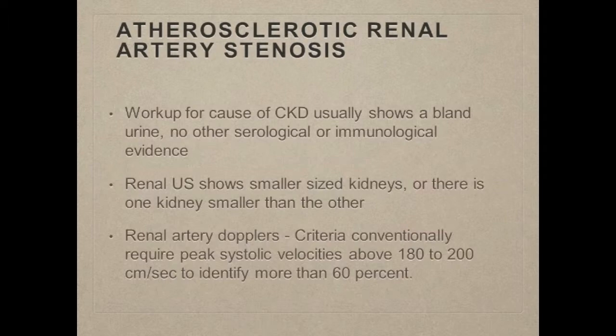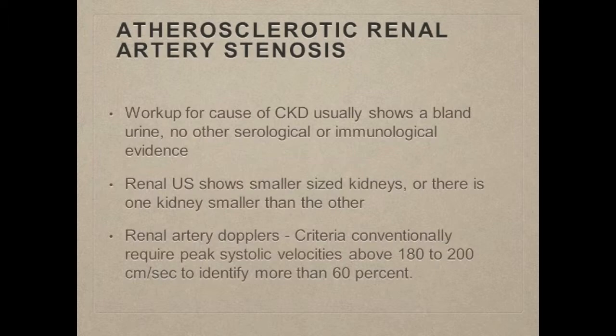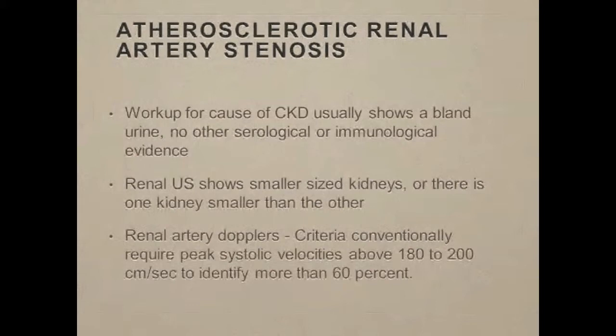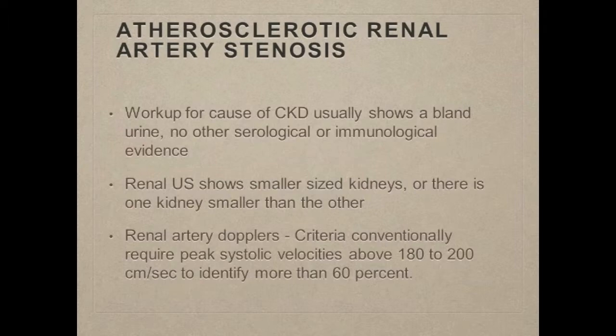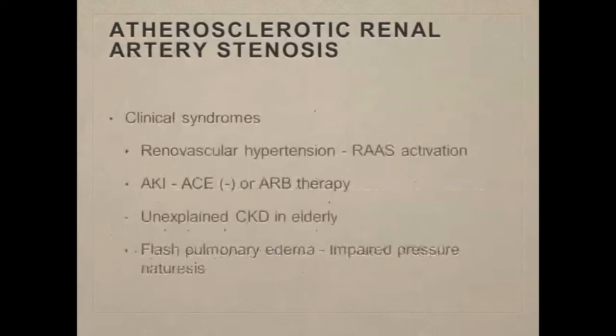On renal artery Dopplers, the criteria for about 60% stenosis is systolic velocities above 180 — usually about 200 is the number radiologists use to define a 60% stenosis. Now, a 60% stenosis does not necessarily mean renal function has declined to the point of needing dialysis, but it does clue you in that they need aggressive therapy to try to inhibit the progression of the disease. It's just like coronary artery disease, and the treatment is going to be pretty much the same.